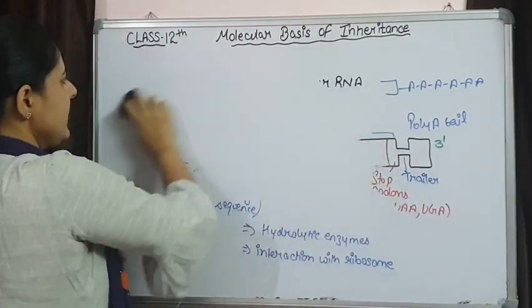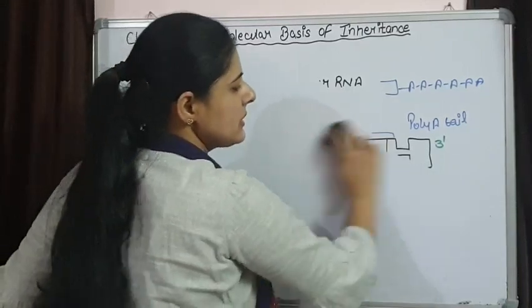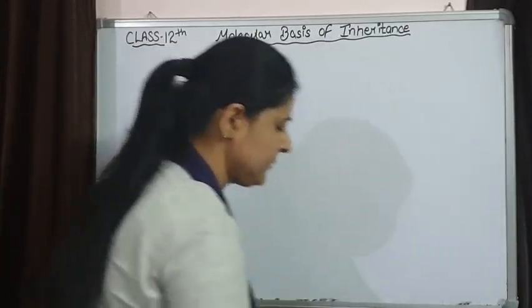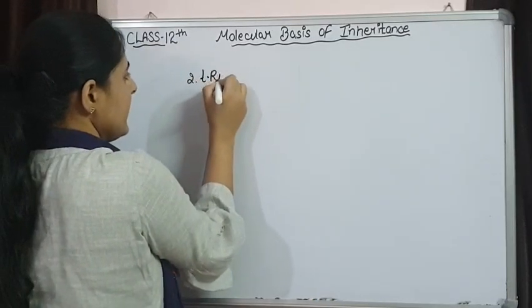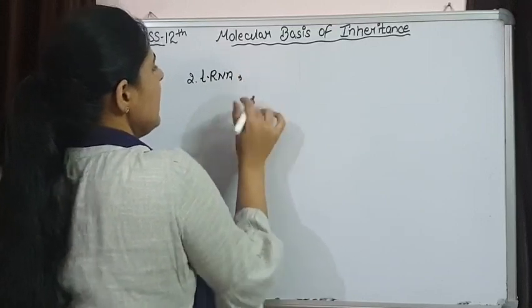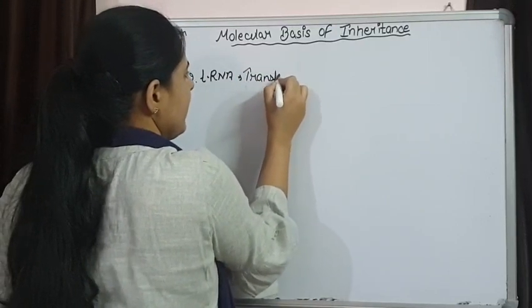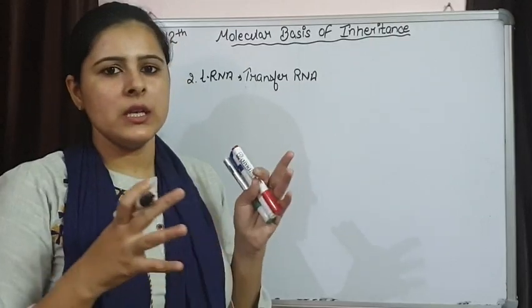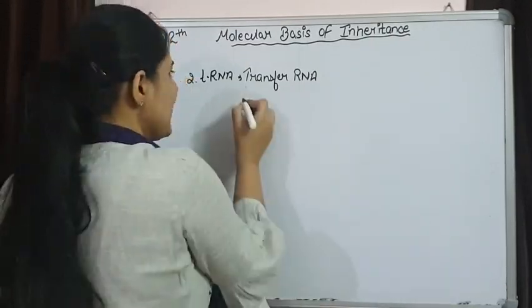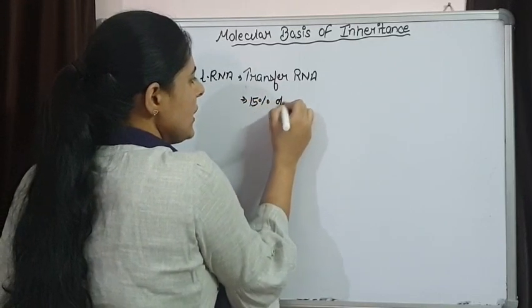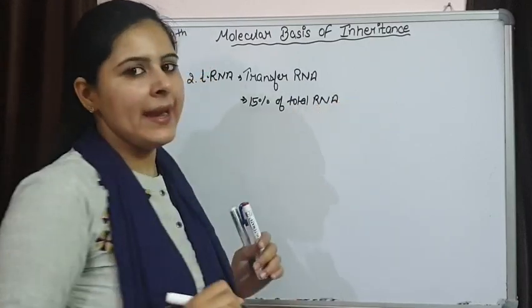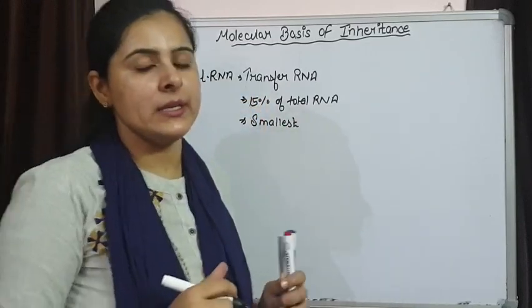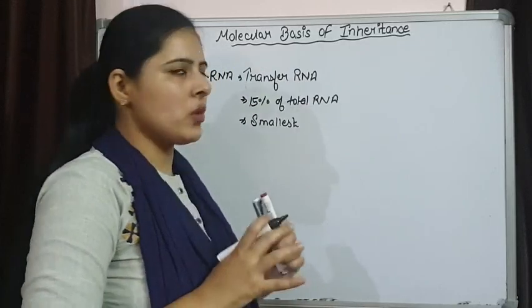The second type of RNA that is required for protein synthesis is tRNA. The second one is tRNA, also known as transfer RNA. If I talk about the total amount of tRNA that is present, it is 15% of total RNA present in a cell, and it is also the smallest one among all the RNA.